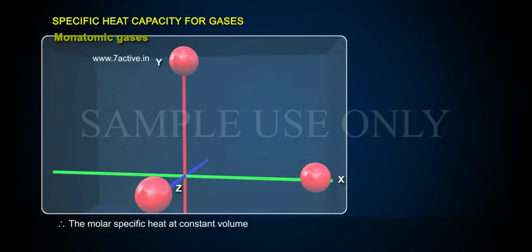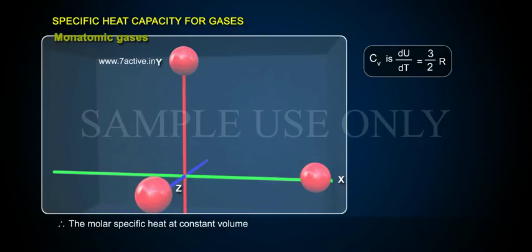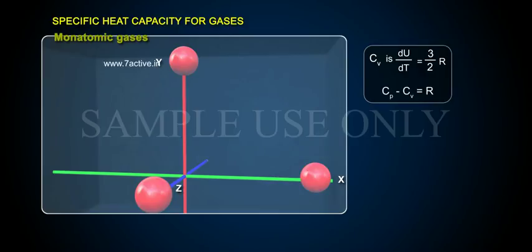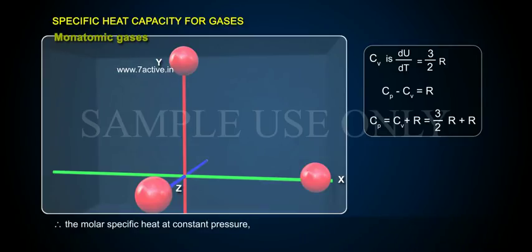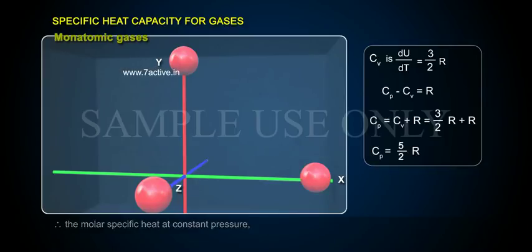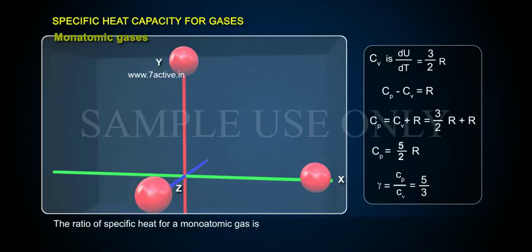Therefore, the molar specific heat at constant volume is Cv = dU/dT = 3/2 R. We know that Cp − Cv = R, which implies Cp = Cv + R = 3/2 R + R. Therefore, the molar specific heat at constant pressure Cp = 5/2 R. The ratio of specific heats for a monatomic gas is γ = Cp/Cv = 5/3.